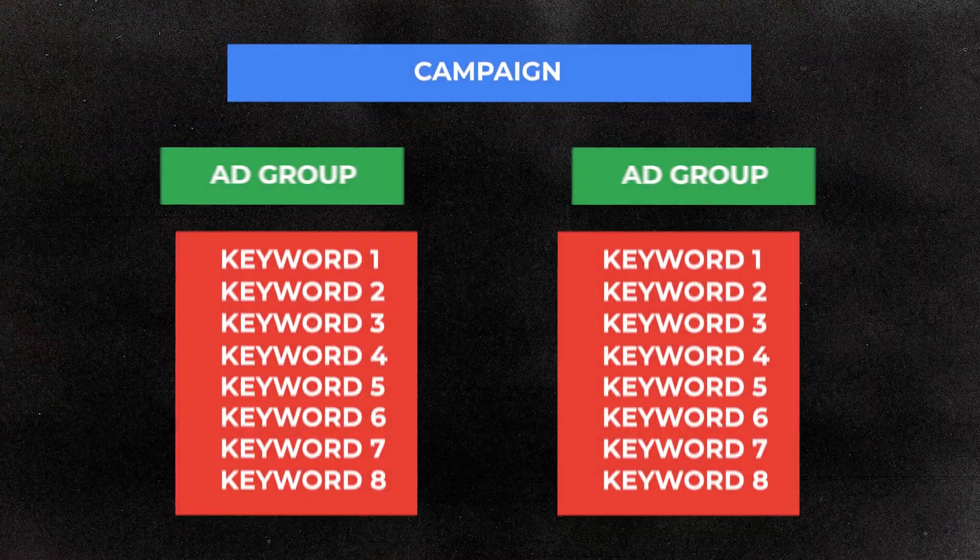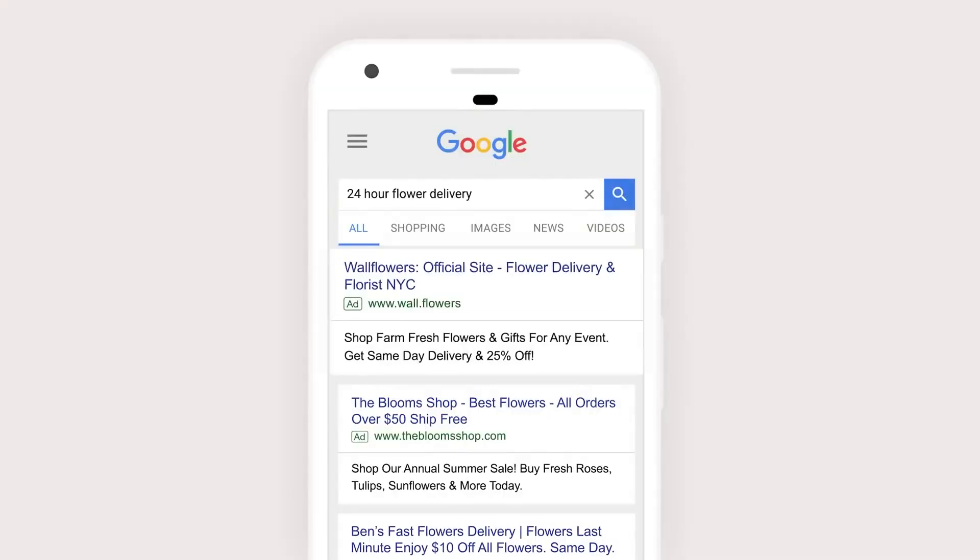The first strategy you need to roll out is having fewer ad groups with more keywords, and this is particularly true for your search campaigns. Historically, you would have multiple different ad groups — sometimes upwards of 20 or more inside a single campaign. Whereas now, the vast majority of my campaigns have no more than three different ad groups, but all of those ad groups can have upwards of 30 or 50 different keywords.